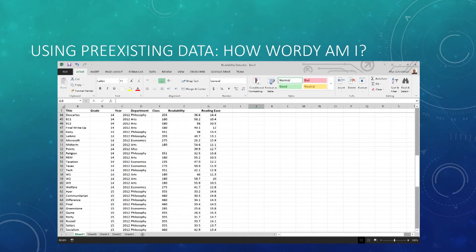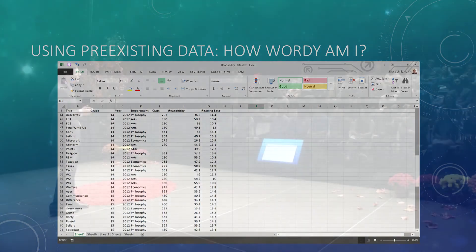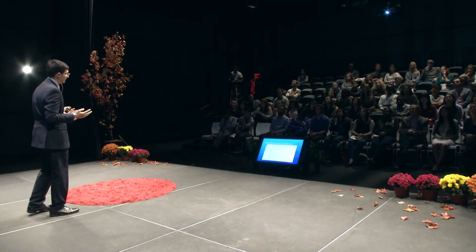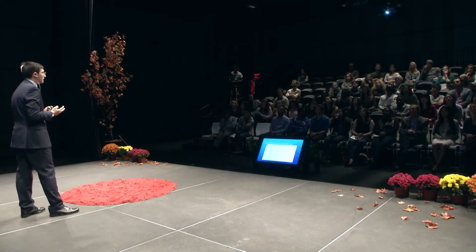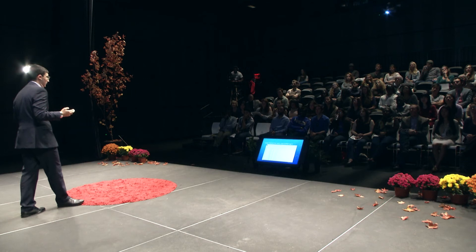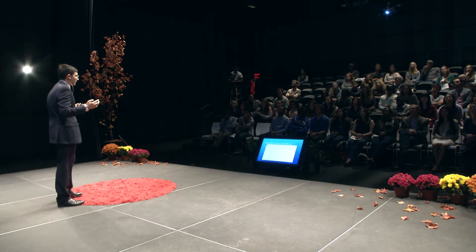Each paper has a number between 1 and 18, where 1 is something written at a first-grade reading level, and 18 is written for someone with a postgraduate reading level, and everything in between.